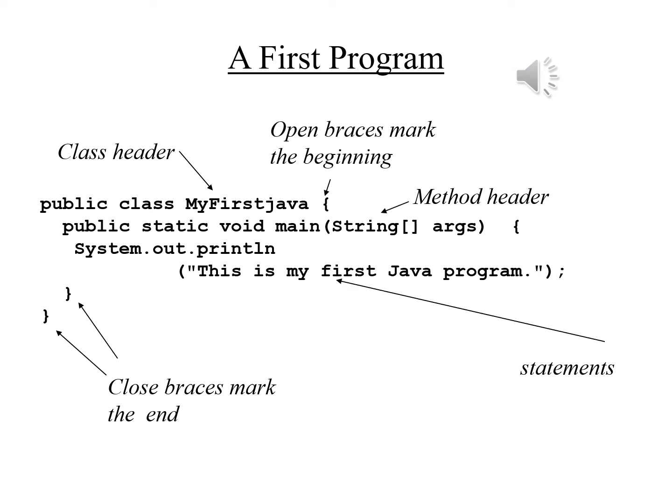We have the word public in front, which is something we will discuss more about later. After the header public class MyFirstJava, we have an opening curly brace. Unlike Python, where we can tell the level of the code by the use of indentation, in Java we use open and close braces to mark the beginning and end of a block of code. We will still use indentation, but it is a style issue, not a syntax issue.